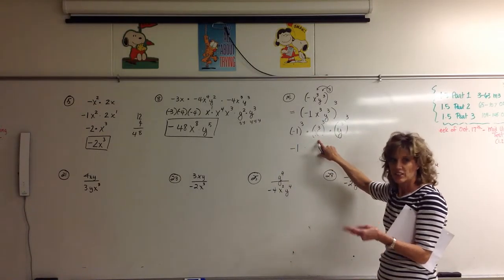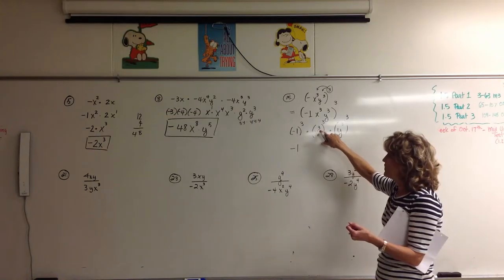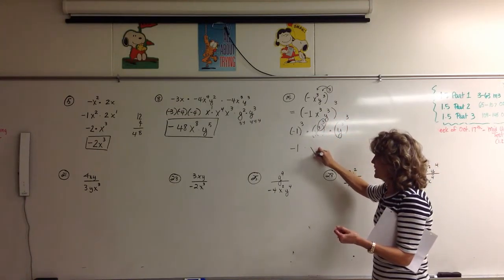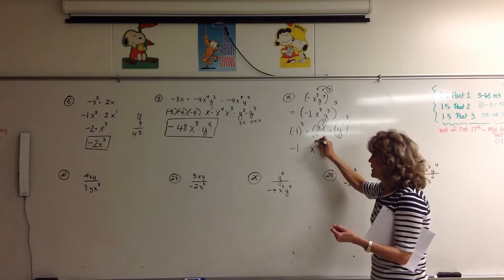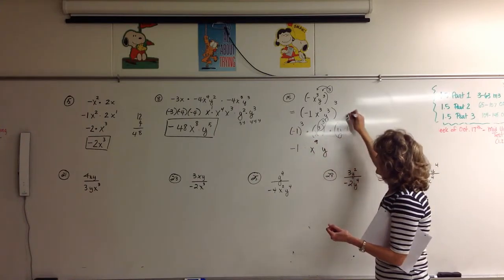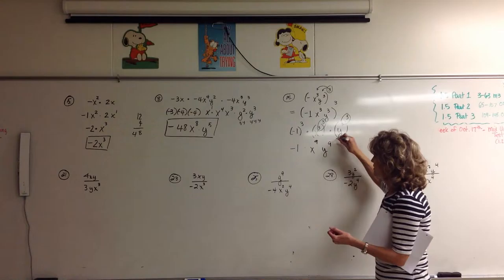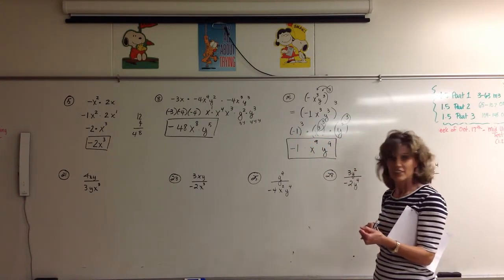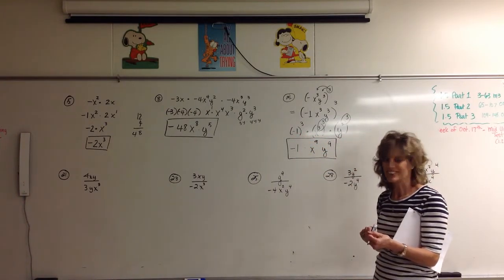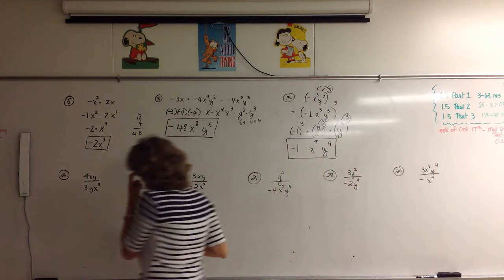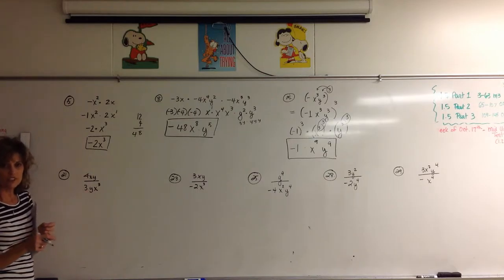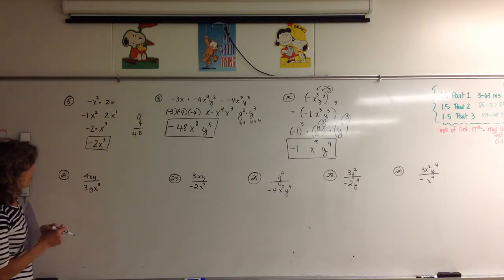Negative one to the third: negative one times negative one times negative one is negative one. And then the rule when we have one base to a power and then another power? Multiply. So that makes this x to the ninth and y to the ninth. Every factor got the power.